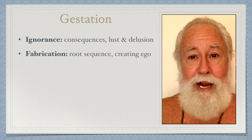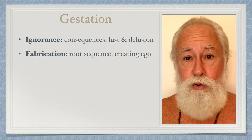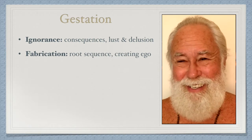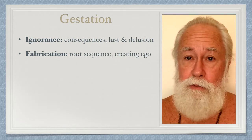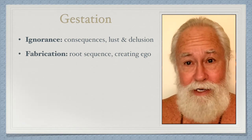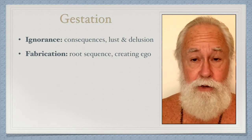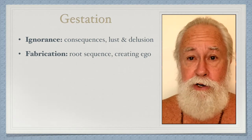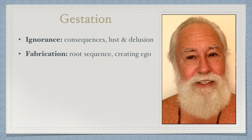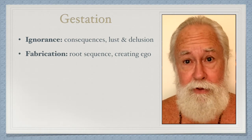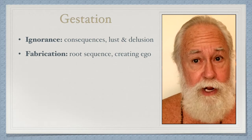Then what comes next? Fabrication. We discussed fabrication in a previous episode on the root sequence — the Mula Pariyaya, sometimes called the root sequence. It is basically the creation of the ego; there are six steps to it, covered in detail elsewhere. This stage of fabrication is the creation of the ego, the creation of the material identity.